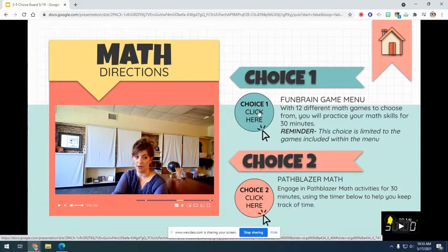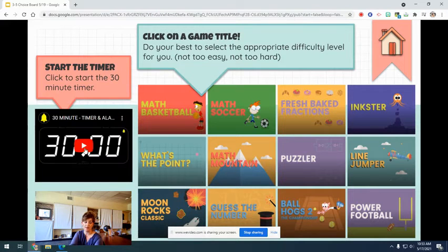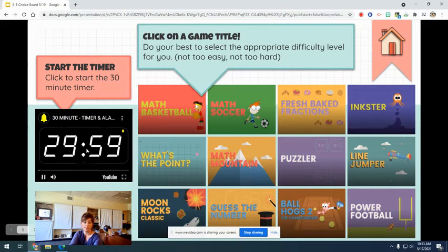You'll set a 30-minute timer. When you click here, this is what the menu looks like, and you can click on any of these images to play the games. But before you click on the images, make sure that you press play here to begin your timer that will alert you when your 30 minutes has passed.